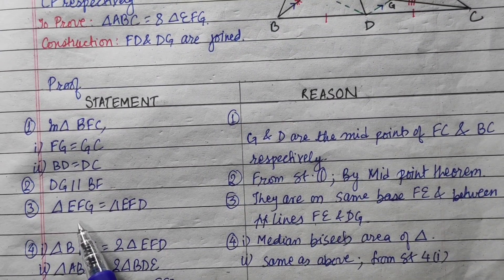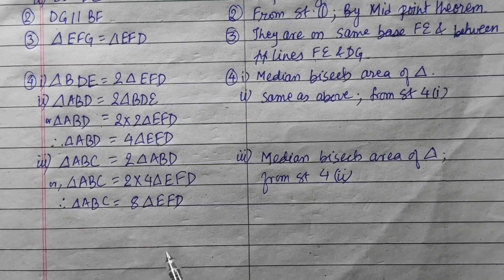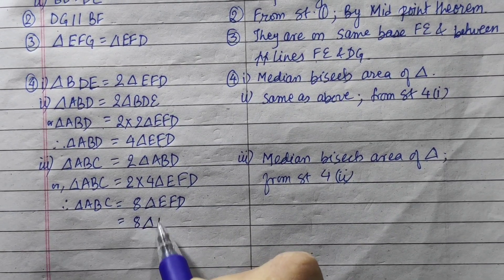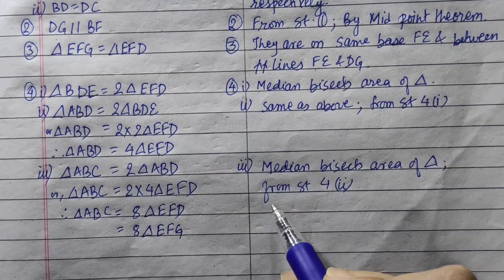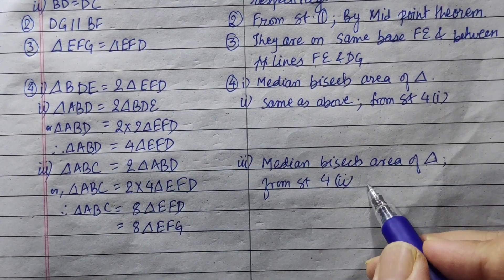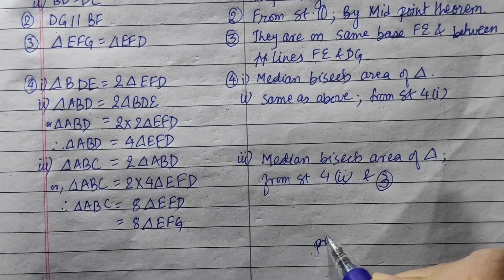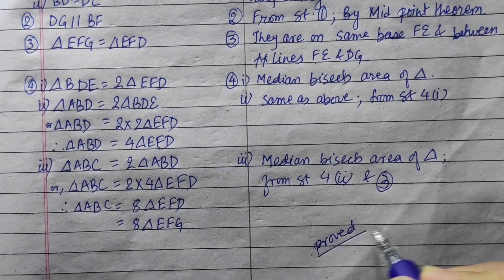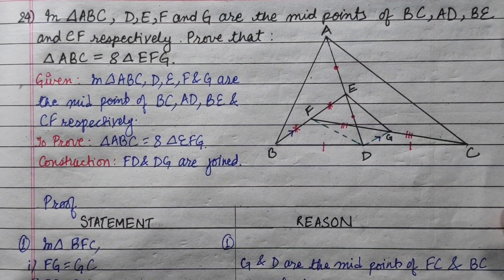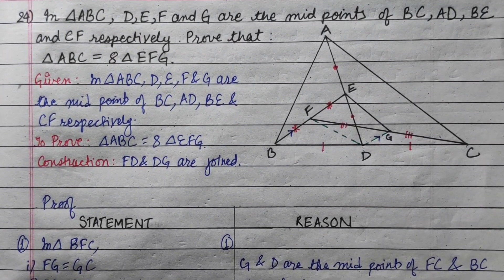Since triangle EFG equals triangle EFD, we replace EFD with EFG. Therefore, triangle ABC equals 8 times triangle EFG, from statement 4 to 3. This is proven with the help of construction. The question is easy once you follow the steps. Thank you.